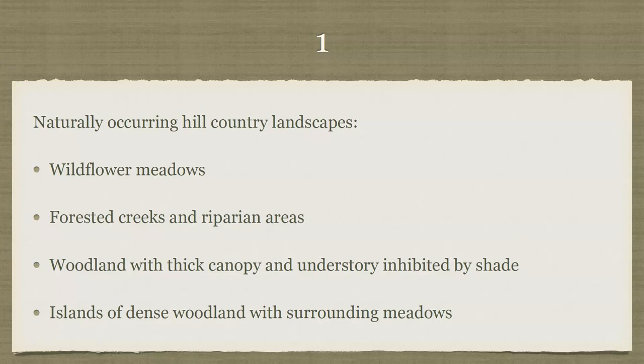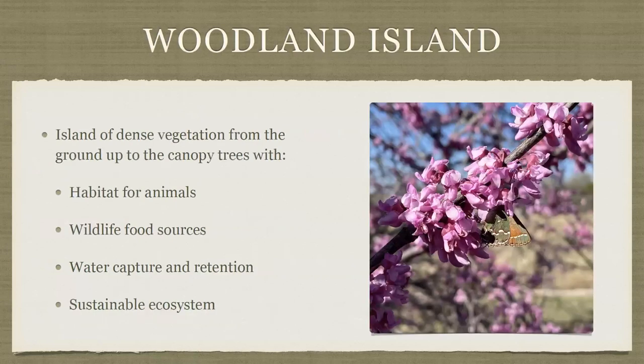You might hear these described as tree mottes. Under a wildlife management program, they tell you to mow your property in a crosshatch pattern to create these islands of vegetation and create edge — it's all the same idea. There's a naturally occurring landscape that looks like a really dense woodland clump, and that's what we're going to talk about today. When you have this kind of ecosystem on your property, you've created habitat for animals and wildlife food sources — here's my redbud tree with a juniper hairstreak butterfly on it.